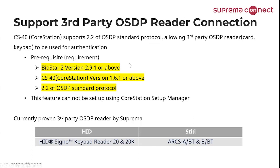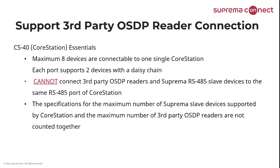Most importantly, these features cannot be set up using CoreStation Setup Manager. Suprema has verified third-party OSDP readers with HID and STID as listed in the chart. For CS40 core essentials: a maximum of eight devices are connectable to one single CoreStation. Each port supports two devices with a daisy chain. You cannot connect third-party OSDP readers and Suprema RS-485 slave devices on the same RS-485 port. The maximum number of Suprema slave devices and third-party OSDP readers are counted separately.